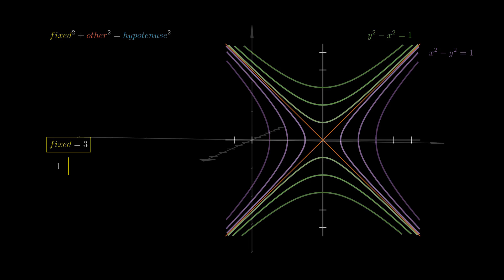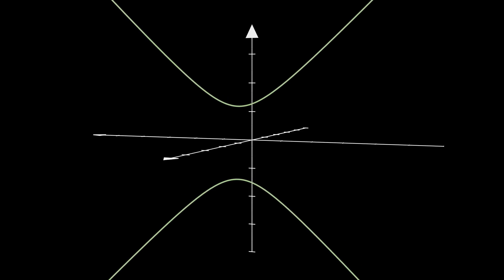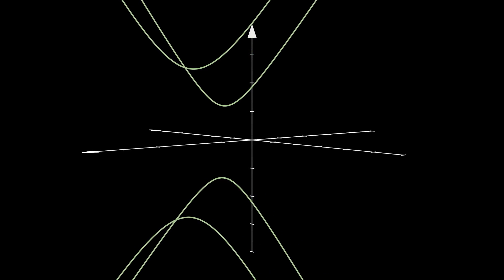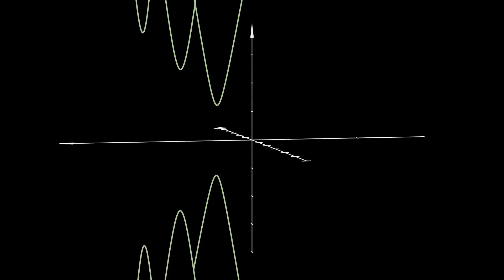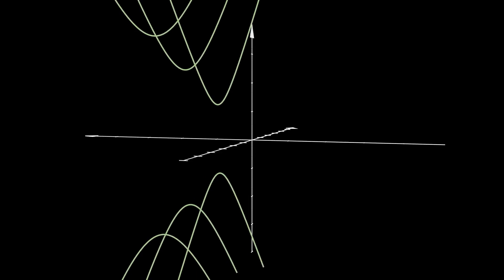We can plot the fixed leg on its own axis if we plot in three dimensions. Here's the hyperbola for a fixed leg of 1, and 2, and 3. Let's fill in some of the other intermediate values.